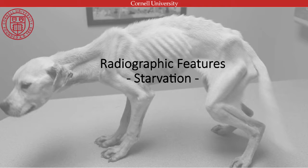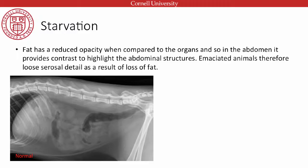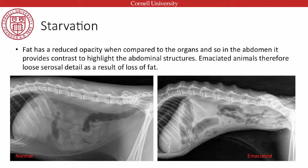I'm going to go through radiographic features of different cases we might see in abuse and neglect. The first is starvation. Fat has a reduced opacity compared to organs in the abdomen. In a normal dog we have a visible renal silhouette, liver, and loops of intestine. When fat is lost due to starvation, we get loss of serosal detail — the margins between intestines and adjacent organs disappear. These animals also have a tucked-up abdomen, a concave appearance, which is important because loss of serosal detail can occur for other reasons.